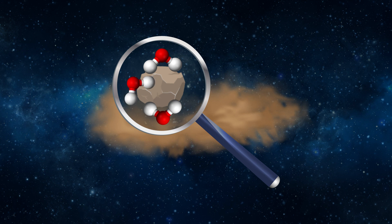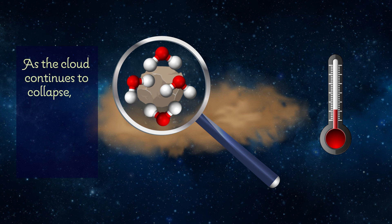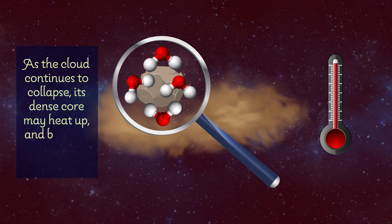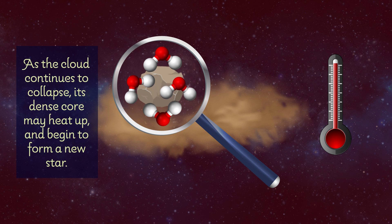This coats the grains with a layer of so-called dirty ice. As the cloud continues to collapse, its dense core may heat up and begin to form a new star. This heat releases the frozen molecules on nearby dust grains, triggering the formation of organic molecules, including alcohols and aldehydes.